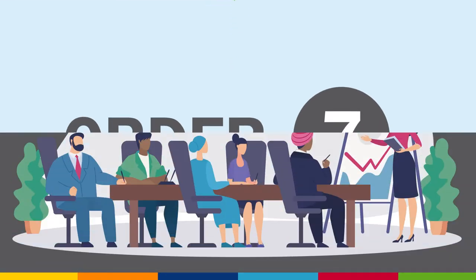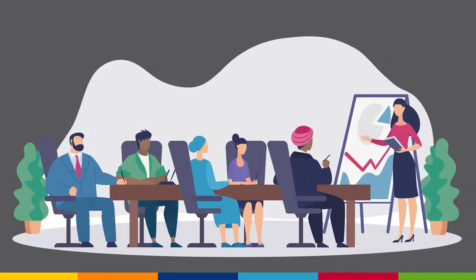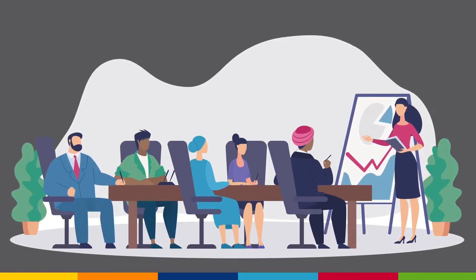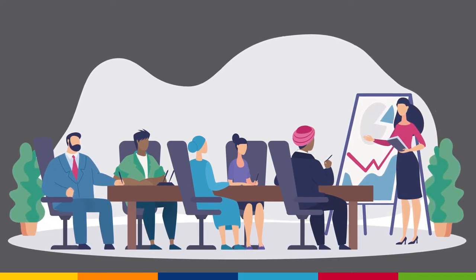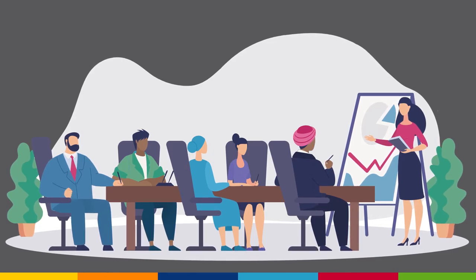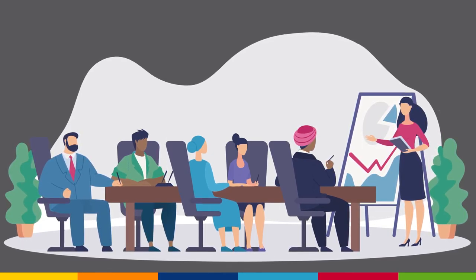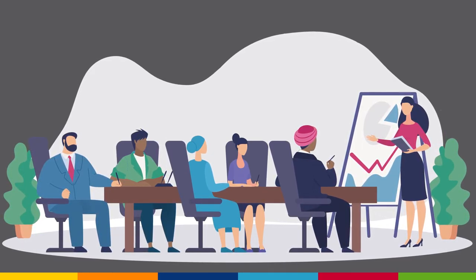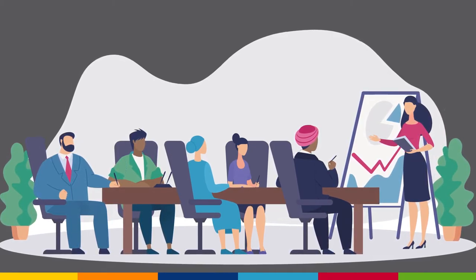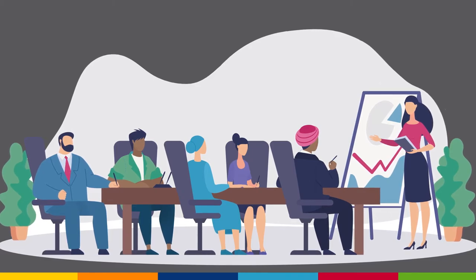Step 7 – Order. The last step is generally the BPU's final order. After exceptions and replies to exceptions are filed, the BPU will consider the initial decision and either approve, reject, or modify it. In the case of a settlement, the BPU will also approve, reject, or modify the ALJ's initial decision. The BPU's final order will specify any approved rate changes and when the rates can become effective.